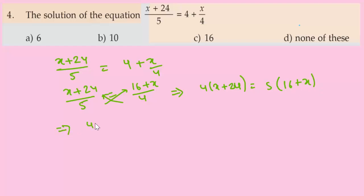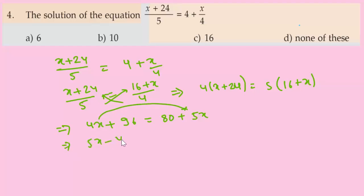Expanding: 4x plus 96 equals 80 plus 5x. Moving 4x to the right side (it becomes minus): 5x minus 4x equals 96 minus 80, which gives x equals 16.